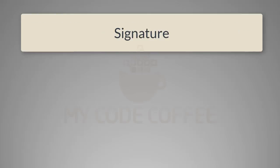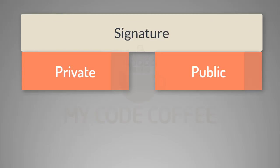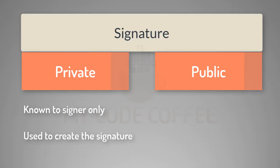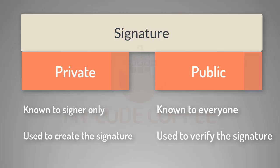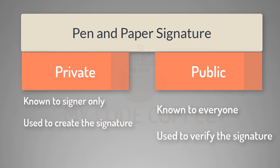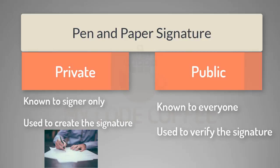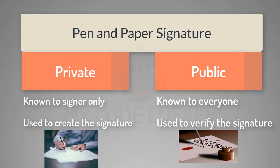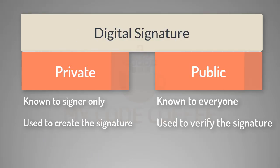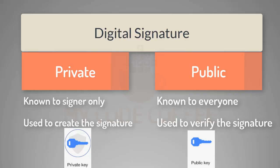Any signature has two attributes: private and public. The private attribute is something known to the signer only and is used to create the signature. The public attribute is something known to everyone and is used to verify the signature. In pen and paper signatures, the private attribute is your unique skill to produce that handwriting, and the public attribute is the symbol you create. In digital signatures, these private and public attributes are keys — the private key creates the signature, and the public key verifies it.